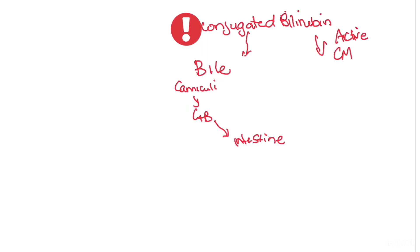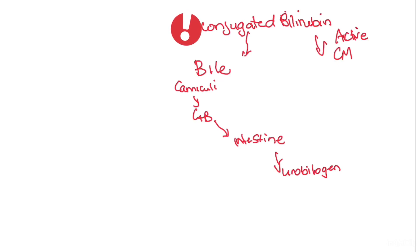The conjugated bilirubin is now soluble and ready to be excreted. It actively crosses the cell membrane into the bile canaliculi, then into the gallbladder, and is secreted into the intestine. Intestinal bacterial proteases act on this bilirubin — which was colorless — giving it a yellow color and forming urobilinogen.